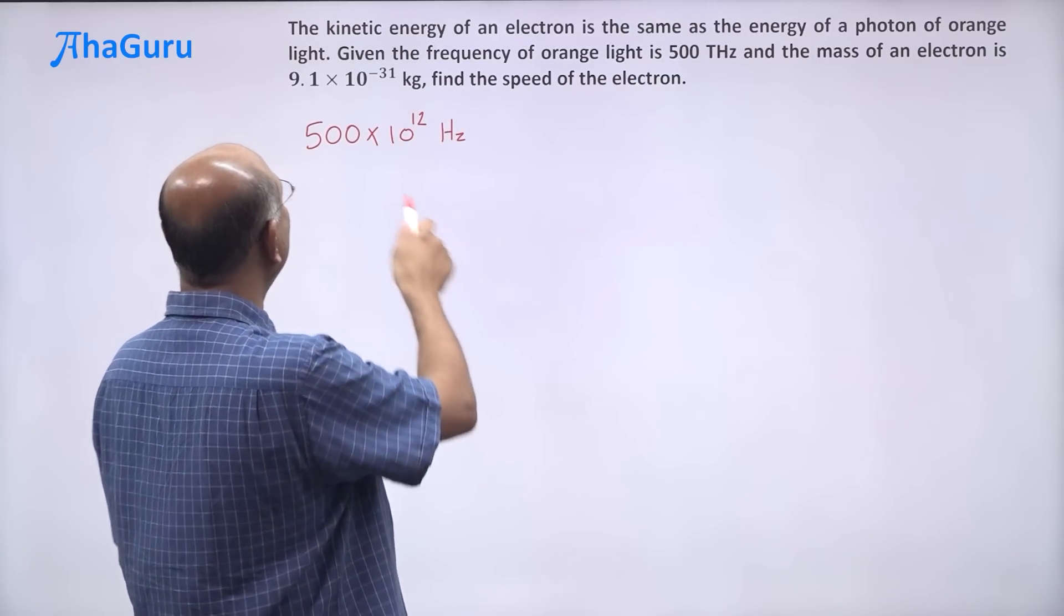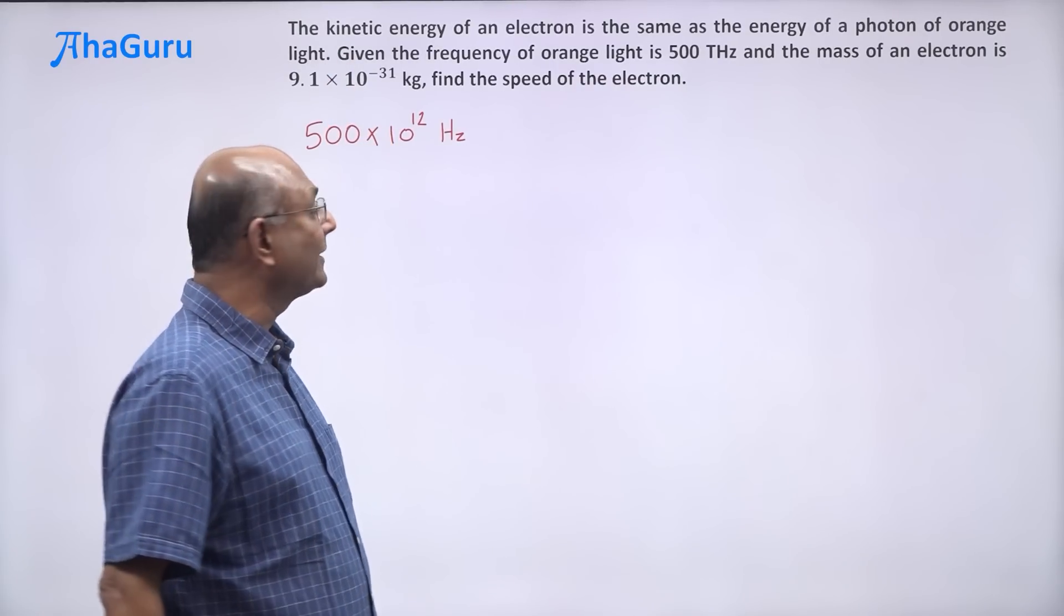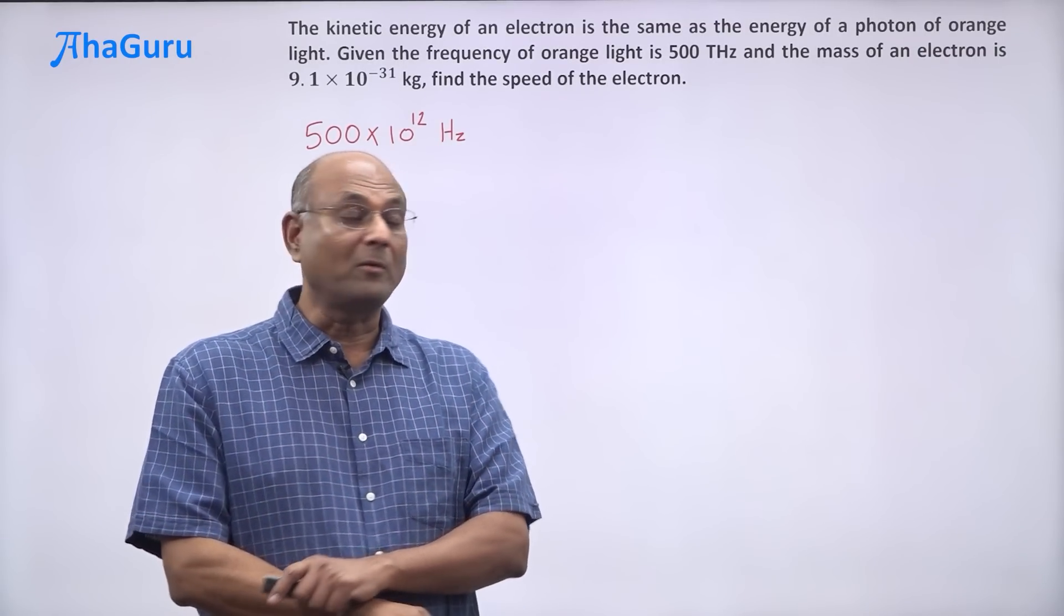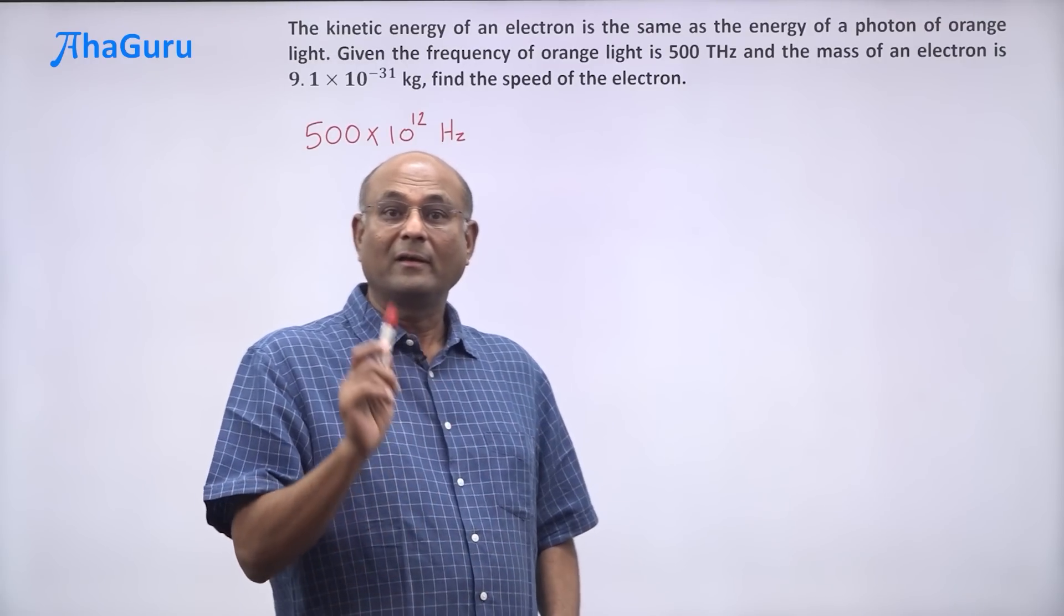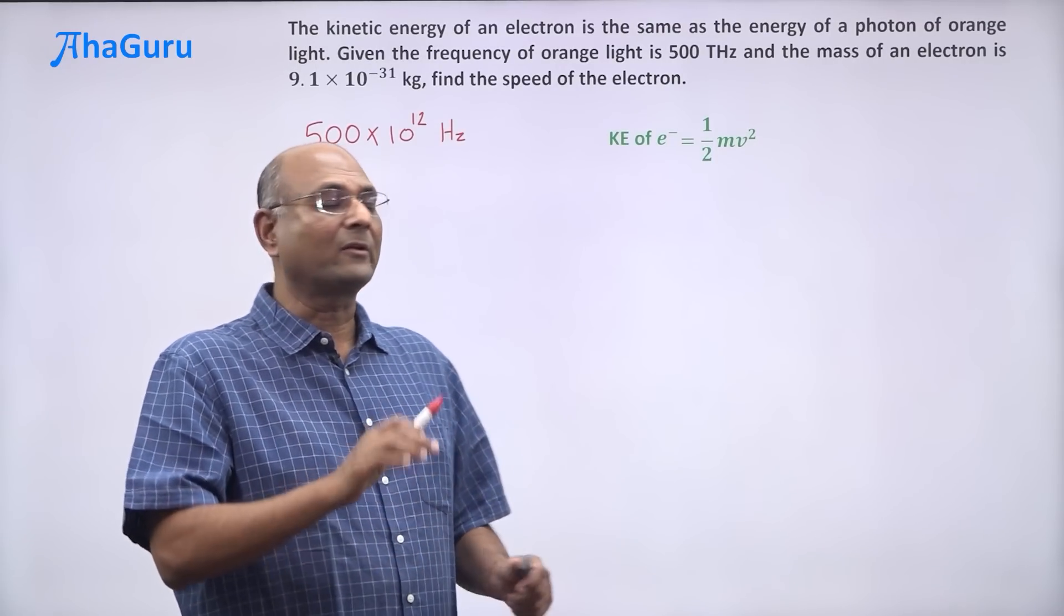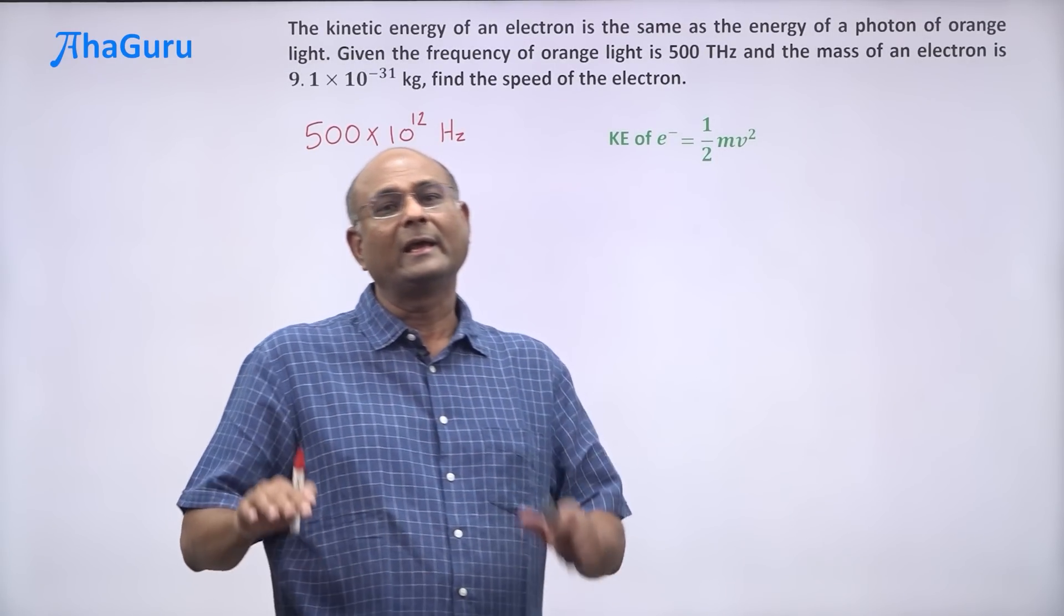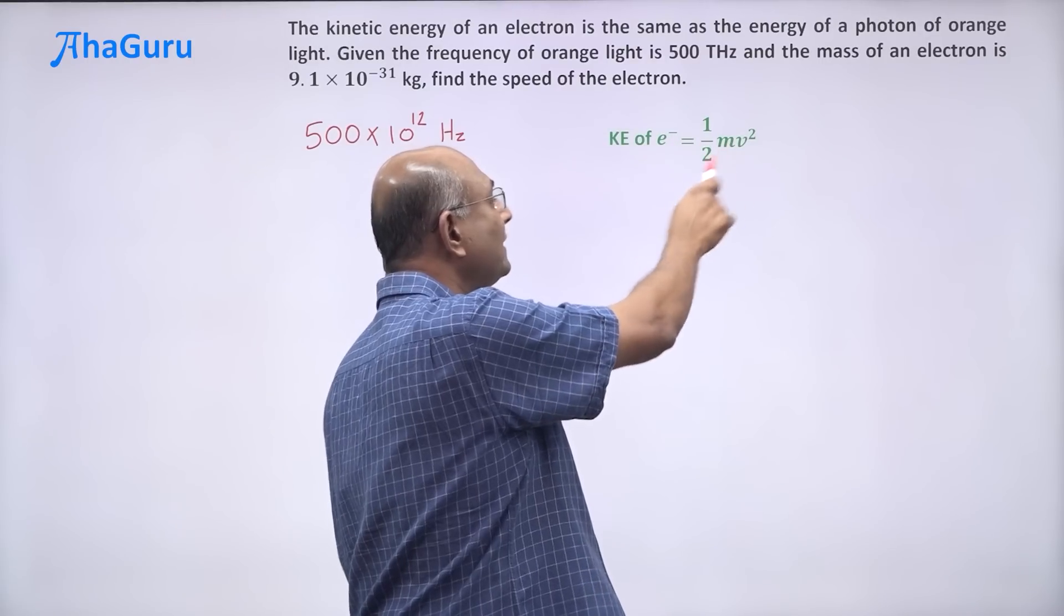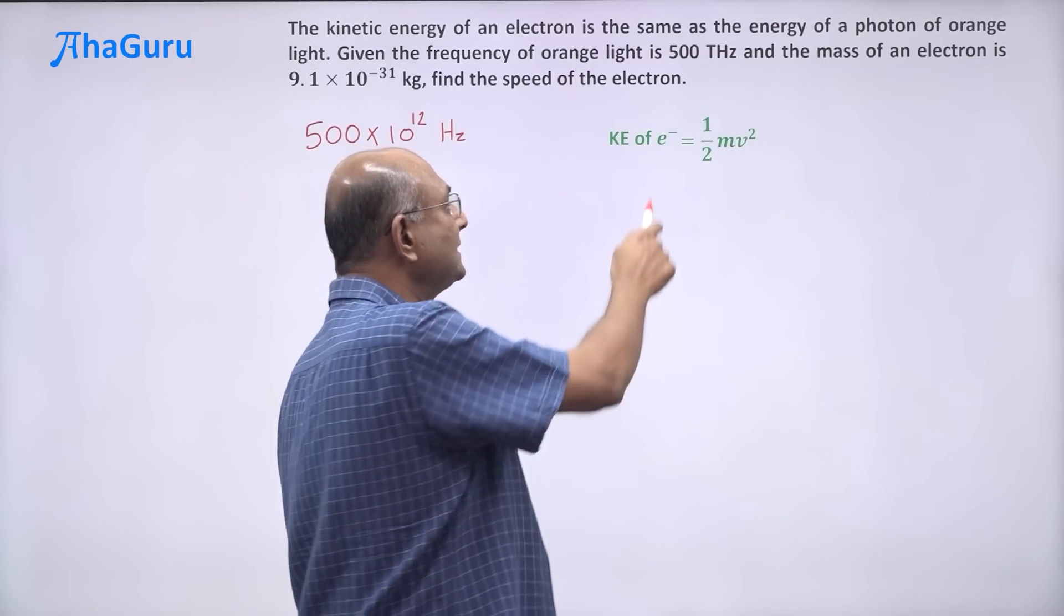And the mass of an electron is given 9.1 × 10^-31 kilograms. Find the speed of the electron. Now the kinetic energy formula for an electron, we can use, it is 1/2 mv² because we are going to assume that the speed of the electron is going to be much less than the speed of light. So we don't have to worry about relativity.